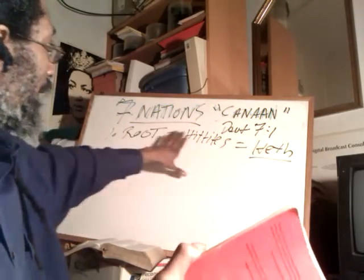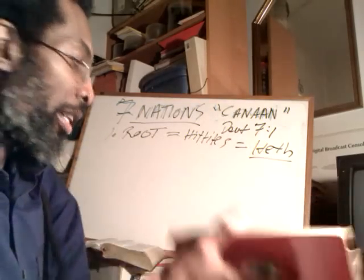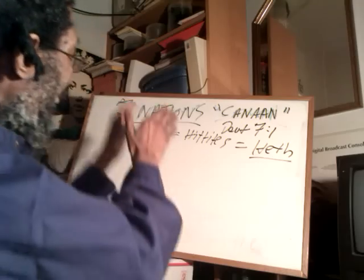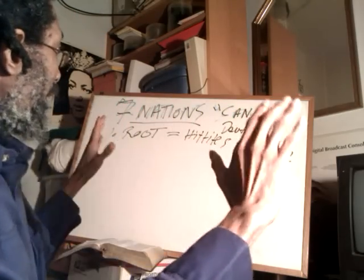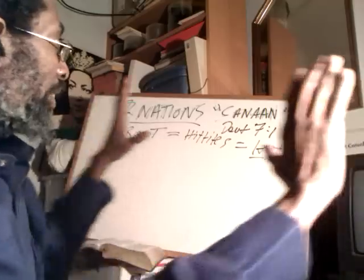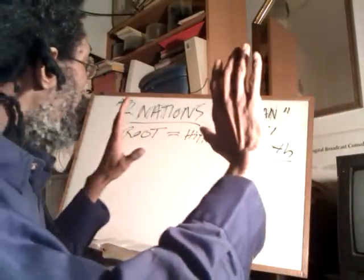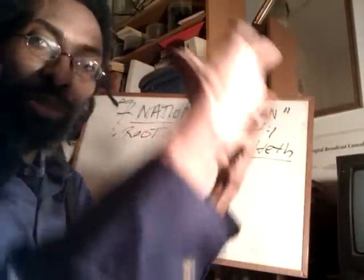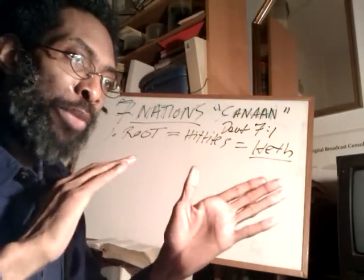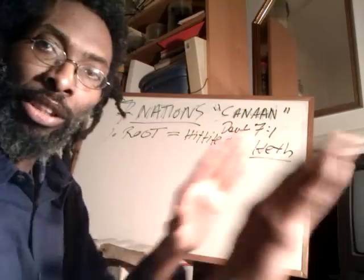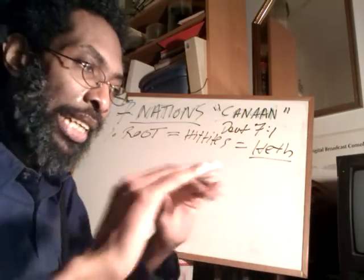The Hittites come from Heth. We're putting this together using the example of how the seven nations of Canaan link with the seven chakras within man — how there is a resonance, a comparative between the two, when we are able to see it spiritually.